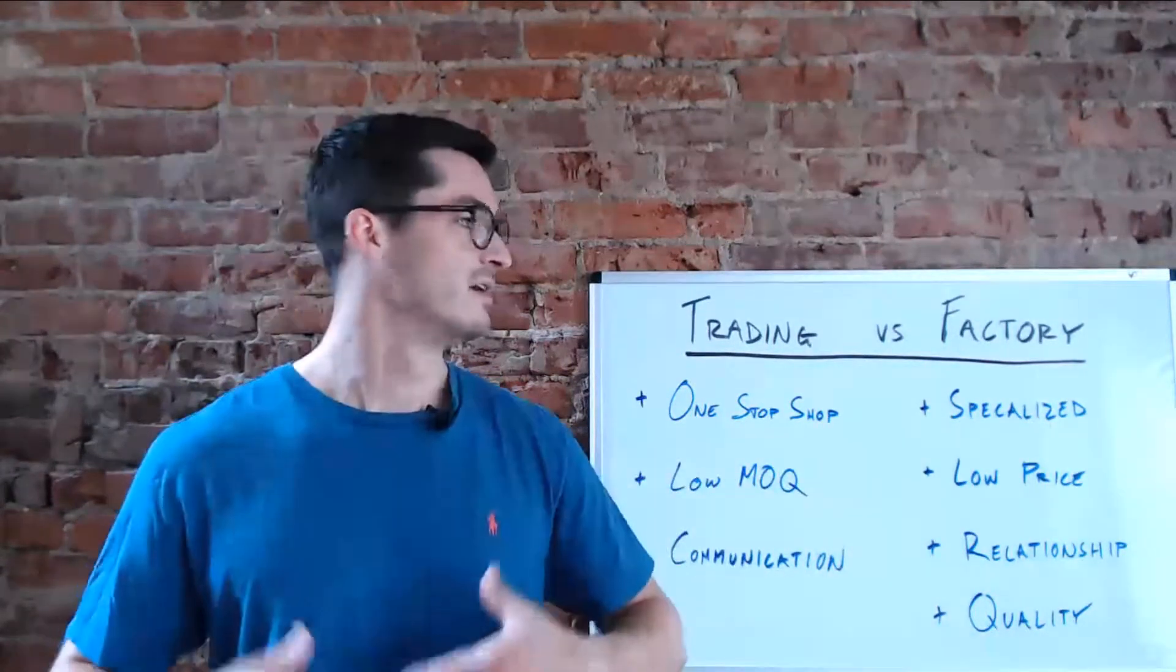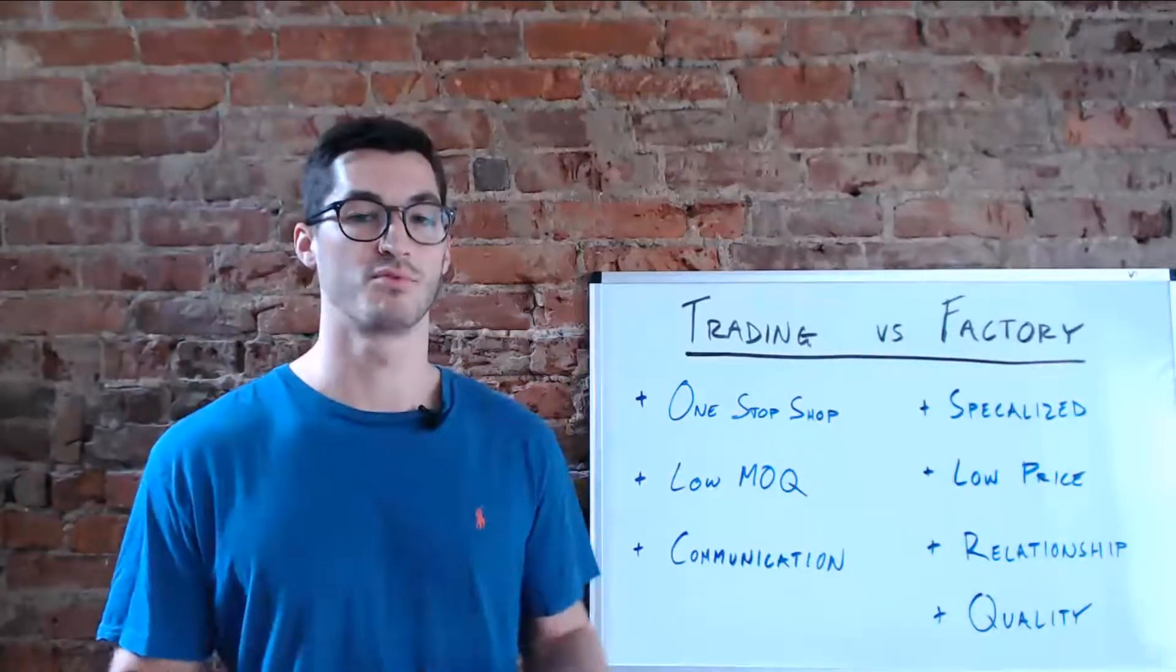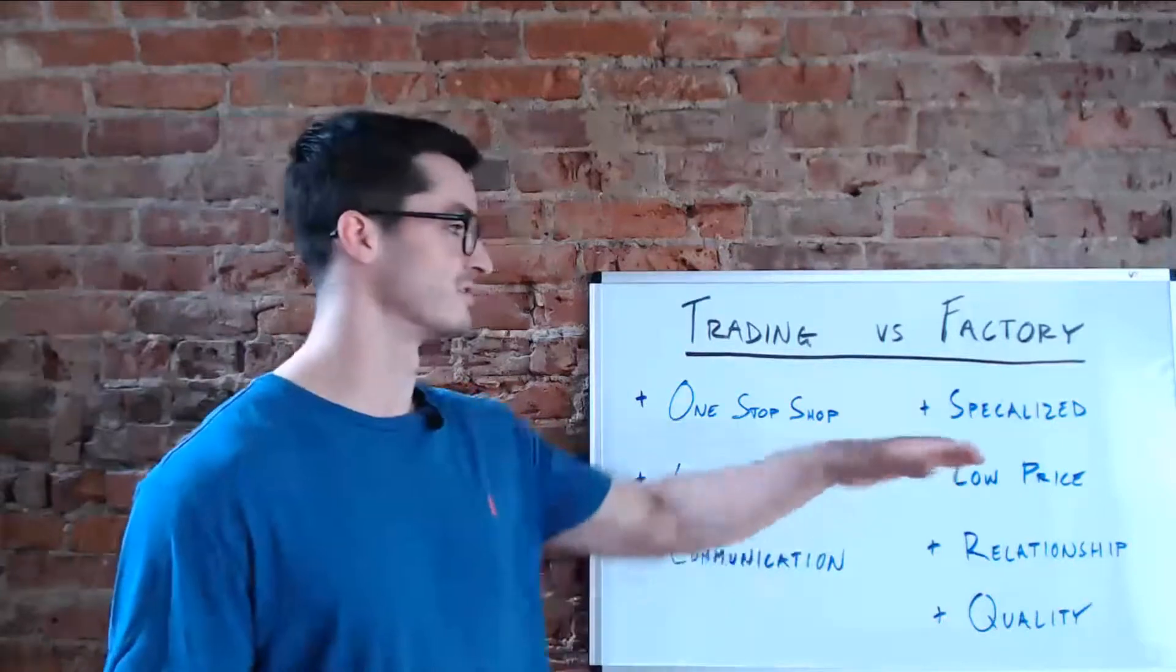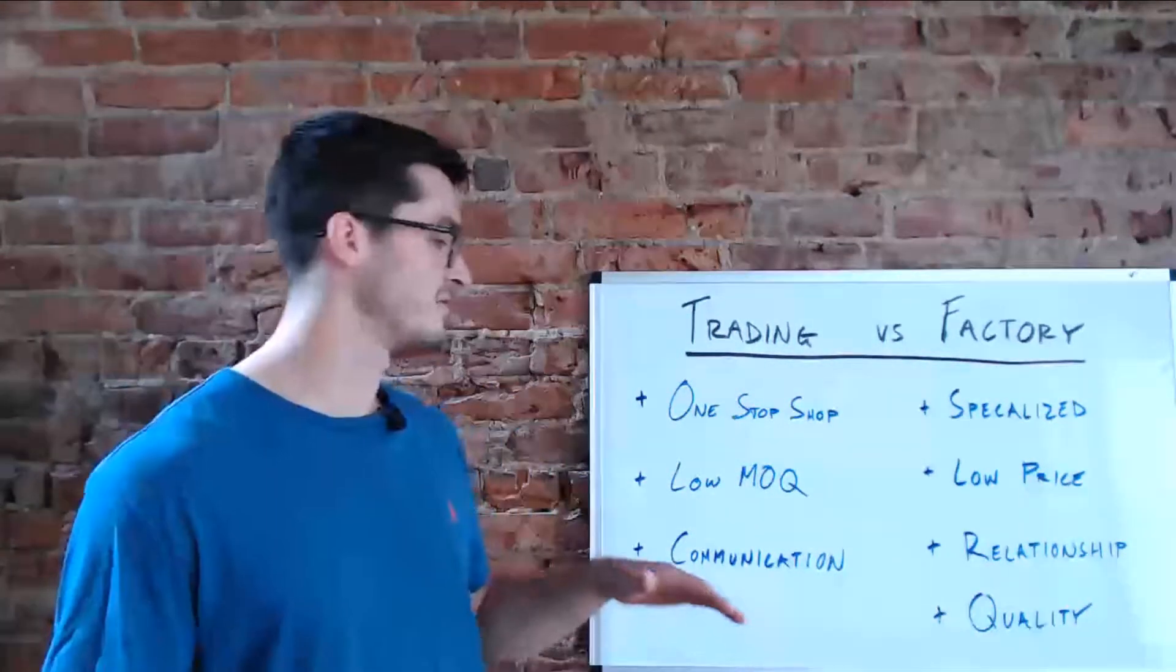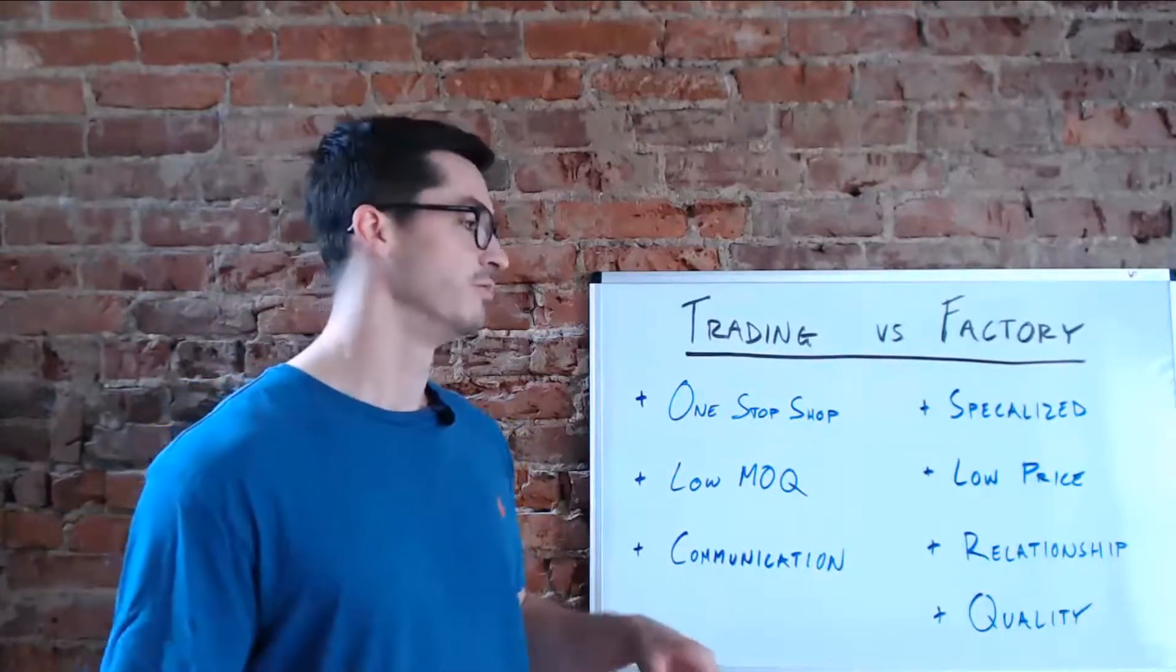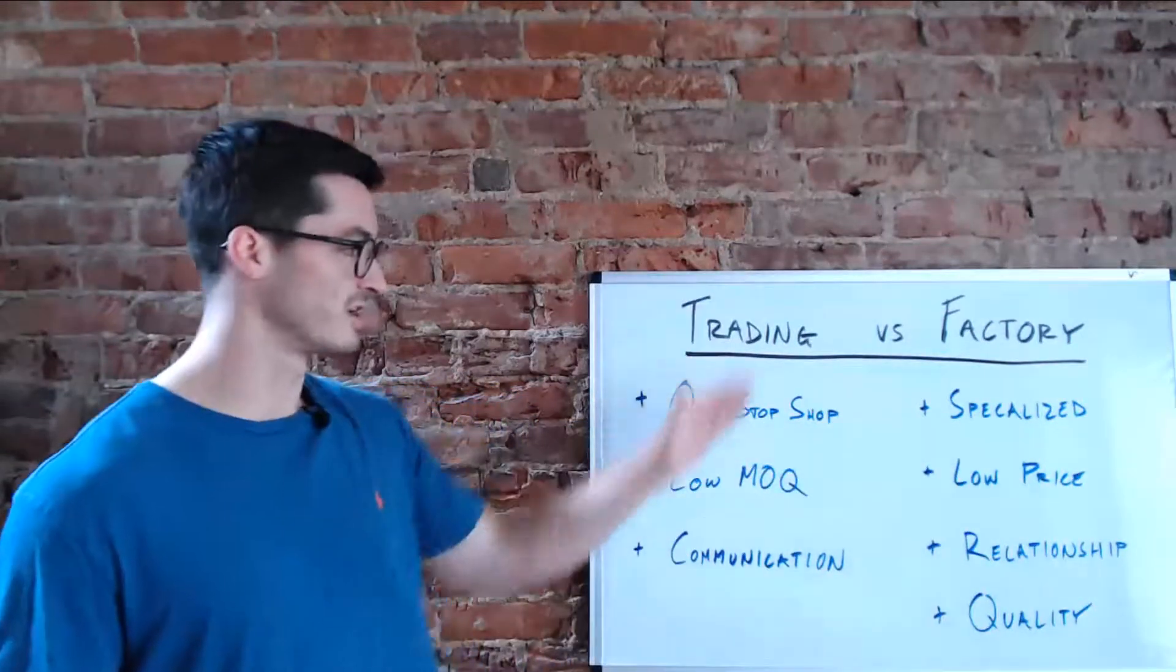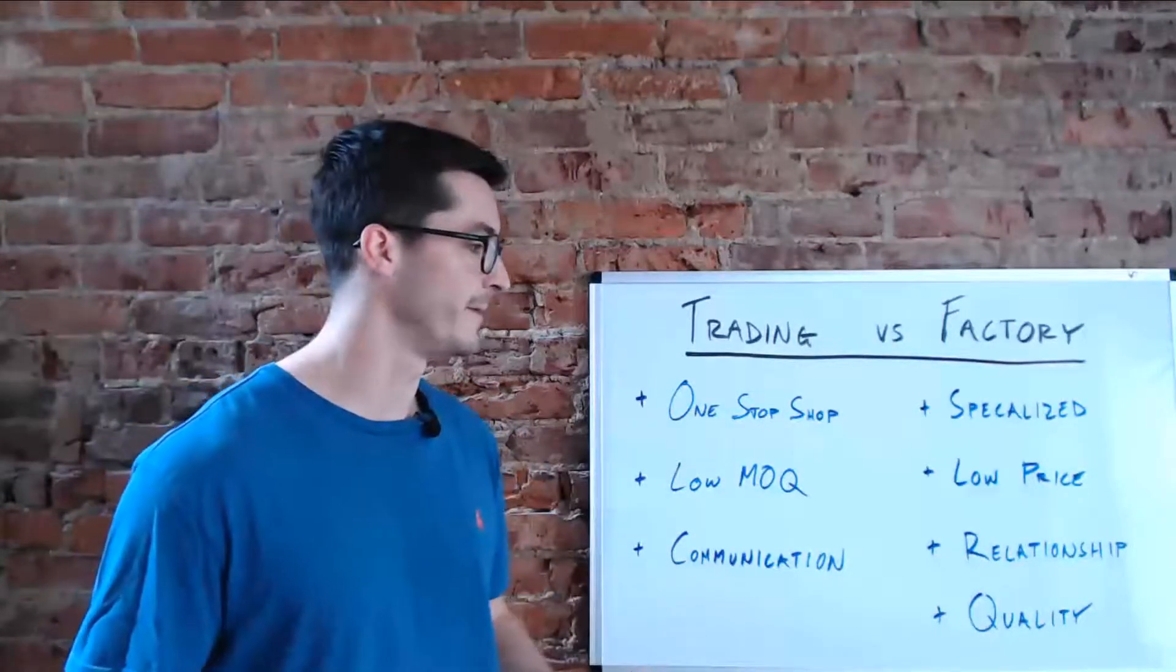Next here on the list is factories are going to be able most of the time to offer you a lower price than the trading company just because you're dealing direct to the source of the factory. You might have to put in an order for a higher MOQ but you will be taking advantage of a lower price because you're essentially cutting out this middleman or so-called trading company.